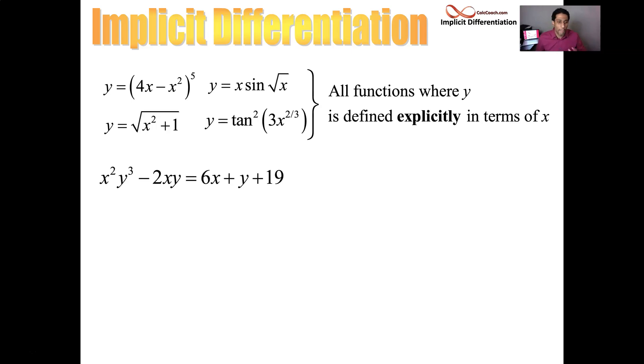x squared y cubed minus 2xy is equal to 6x plus y plus 19. I can't solve this for y in terms of x only. I can't write this explicitly, but that's OK. I'm still going to be interested in finding the slope of the tangent line at a particular value of x and y.